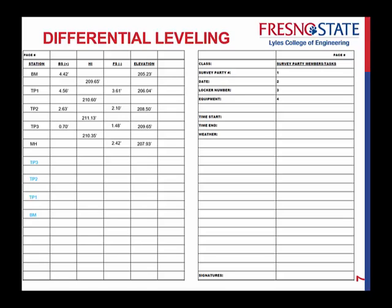Before, we went in one direction. The elevation was unverified — the 207.93 was not verified properly. So what you have to do is actually go backwards now. And this is what constitutes being an actual loop.